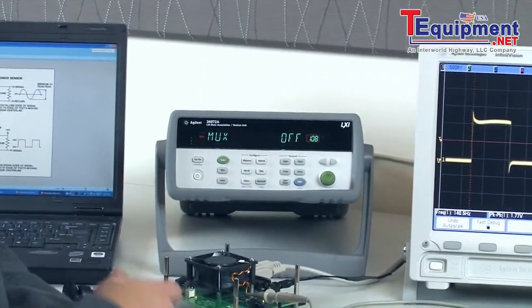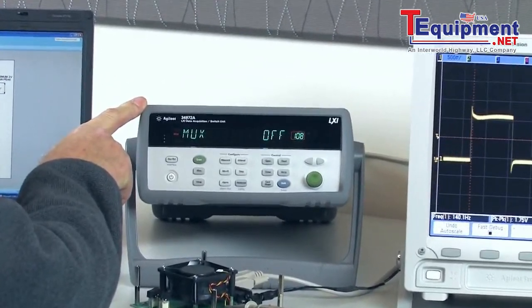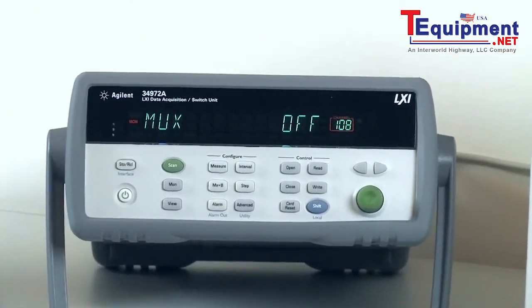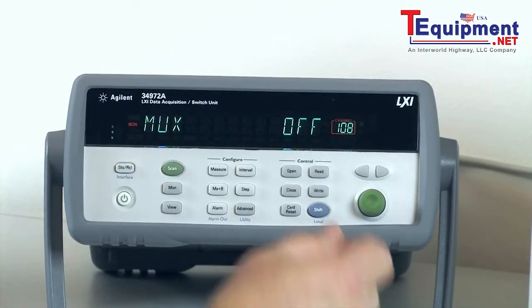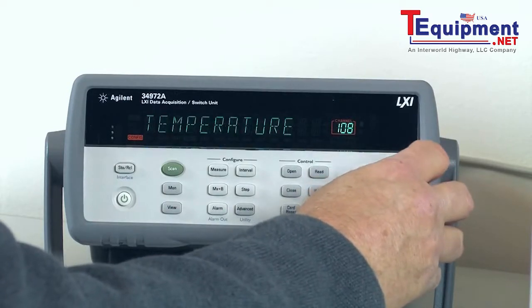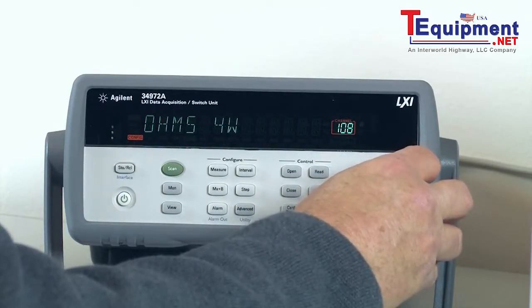So what I'm going to use instead is the Agilent 34972 here to measure that pulse and we're going to turn it into RPM. So first I have to set up my measurement. I'm going to turn the channel on. I can measure temperature or AC volts, DC volts, a bunch of stuff.